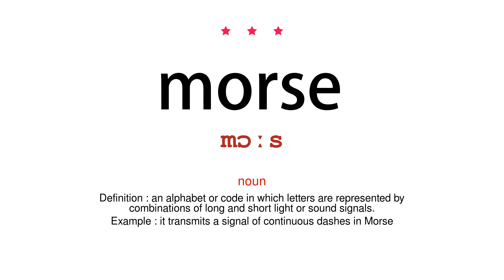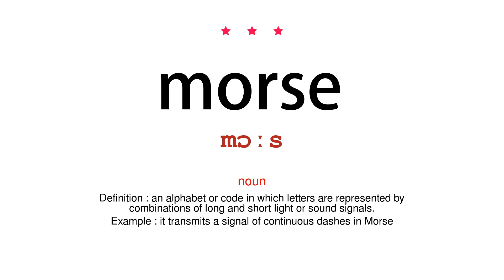Noun. Definition: an alphabet or code in which letters are represented by combinations of long and short light or sound signals. Example: it transmits a signal of continuous dashes in Morse.